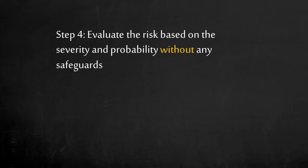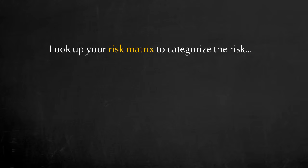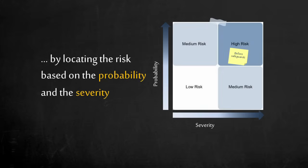Step 4: Once a consensus is reached, evaluate the risk based on severity and probability without any safeguards. Let's say our scenario has a high probability of control valve failure and a high severity due to possible fatality. The definition of high probability and high consequences is defined in your corporate risk matrix. Look up your risk matrix to categorize the risk. To keep this example simple, there is high probability and high severity on the risk matrix. This is considered a high risk and not acceptable. What can be engineered to reduce this risk?